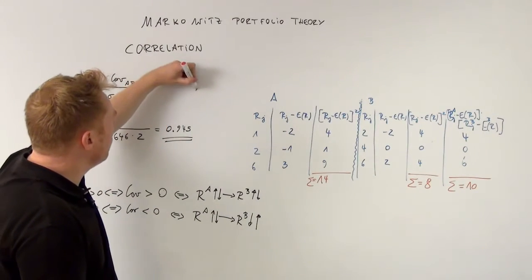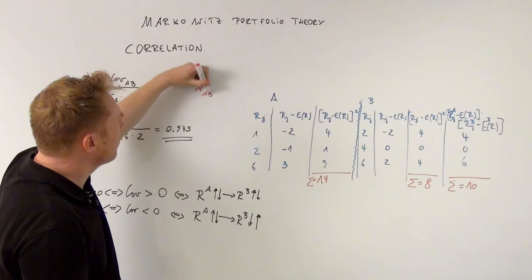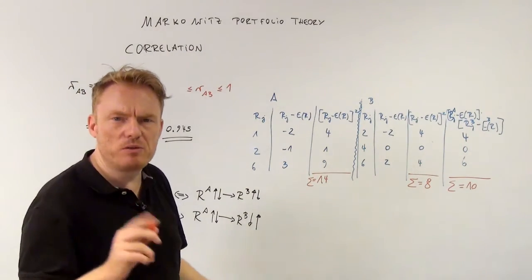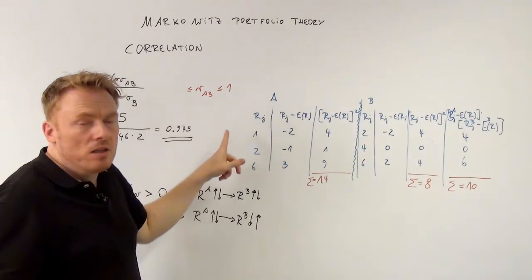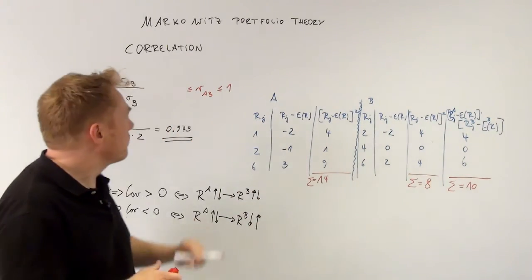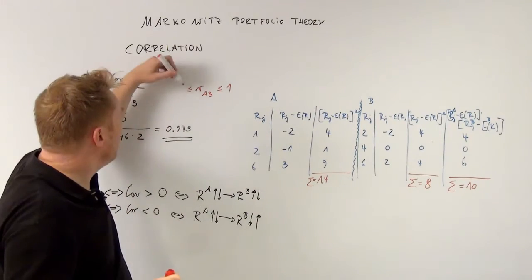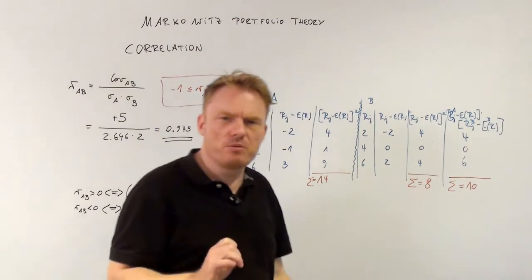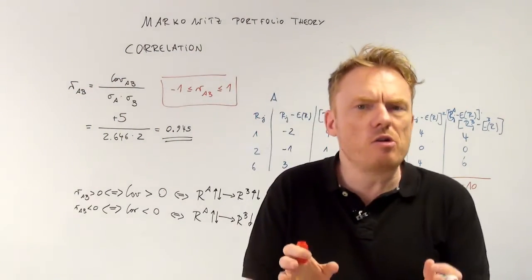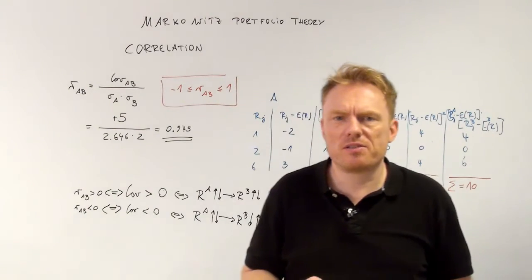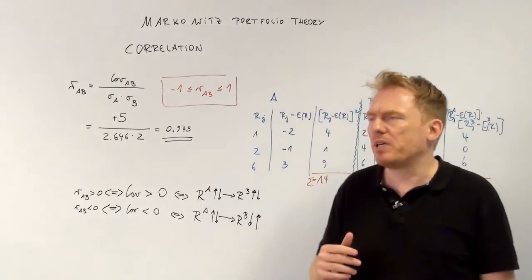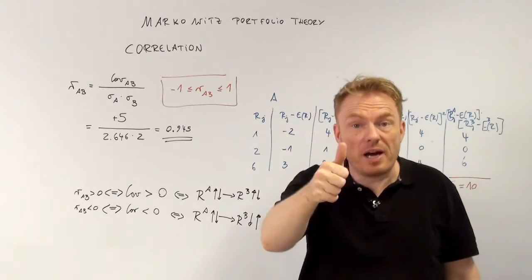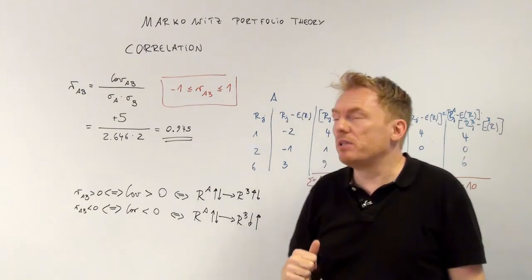That's very important. The correlation coefficient has an upper bound of plus 1 — it can never be strictly superior to plus 1 — and a lower bound of minus 1, which is not true at all for the covariance. There are no bounds for covariance, so we cannot look at the number, we can just look at the sign. But with correlation, we can look at both the sign and the number.